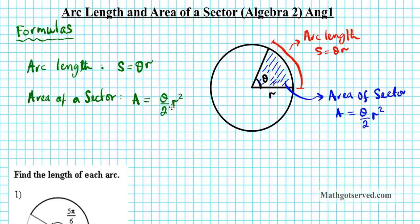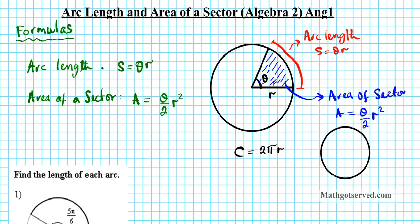The area of the sector is given by A equals theta over 2 times the radius squared. Now these two formulas, you've seen them before — you might not realize it, but you actually have. If you think about the formula for the circumference of a circle, C equals 2 pi r, this is a special case of this arc length formula. Let's say we have a circle with radius r and the angle of rotation is a full circle.